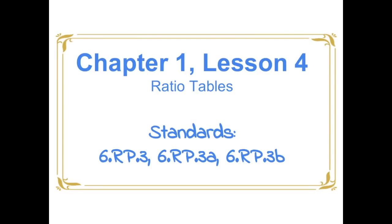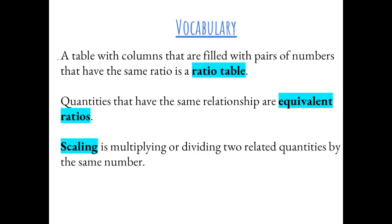Chapter 1, Lesson 4: Ratio Tables. A table with columns that are filled with pairs of numbers that have the same ratio is a ratio table. Quantities that have the same relationship are equivalent ratios. Scaling is multiplying or dividing two related quantities by the same number.